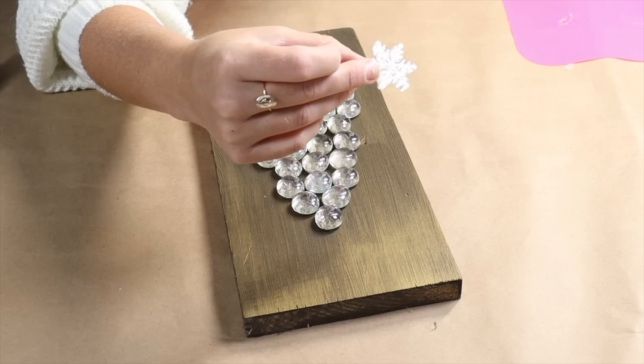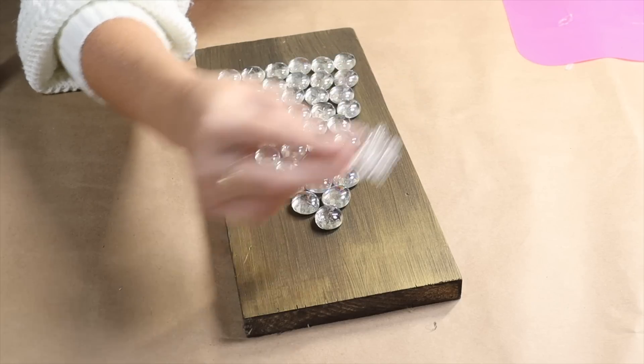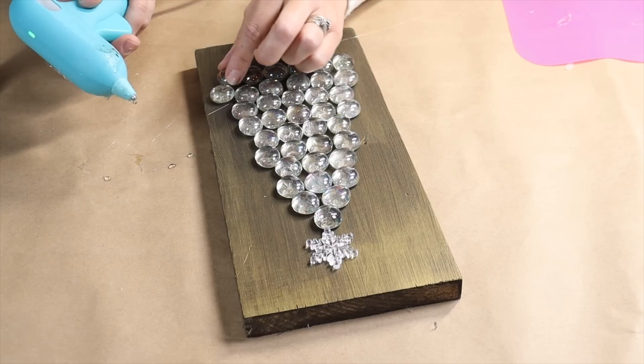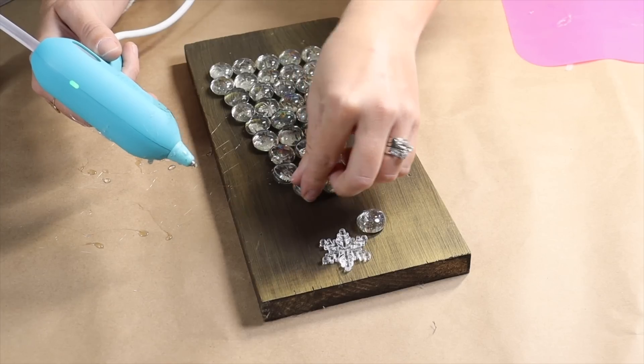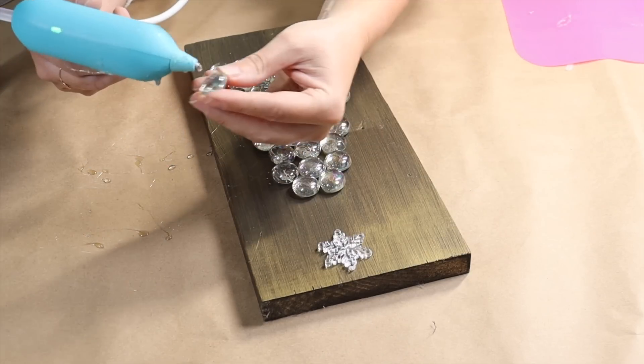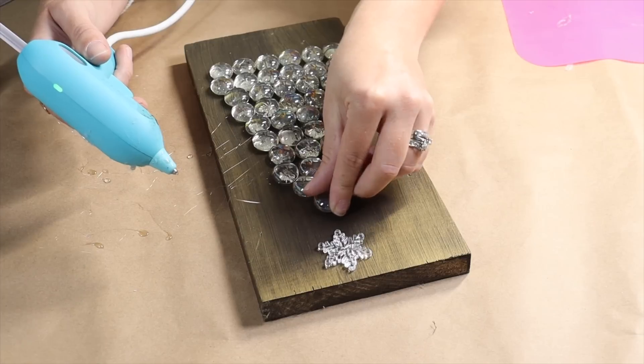I'm placing them in spots here, and then I'm going to make sure I like the shape and everything before I glue them down. I found this cute little plastic snowflake in my Christmas craft collection, and that is what I'm going to use for my star.